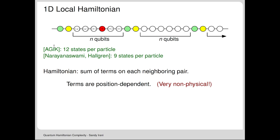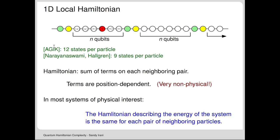Another non-physical aspect: this is a highly engineered Hamiltonian—the terms between each pair of qubits differ. But in a physical system representing a material, you'd expect much more uniformity—all neighboring particles governed by exactly the same term. This raises the question: if you have translation invariance, meaning the Hamiltonian is the same applied to every pair of particles on the line, does that make the problem easier?